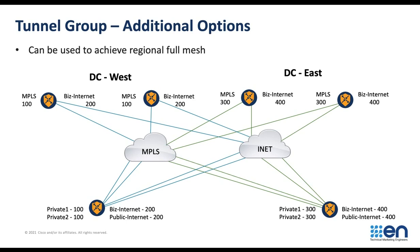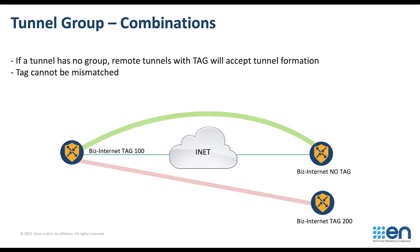You can rely on Tunnel Groups for more complex designs like Regional Full Mesh. You can have East Hemisphere and West Hemisphere and use Tunnel Groups, so each branch is going to connect only to its own geolocation data center. One thing to note is that Tunnel Group is only going to form tunnels with the same tag or no tag at all.